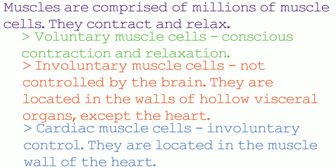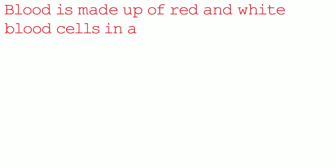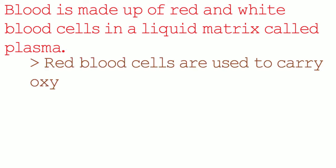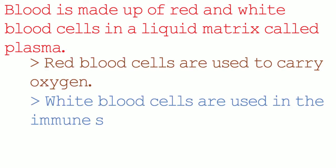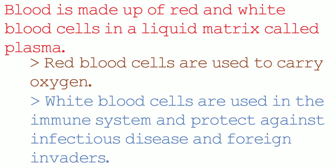Another type of tissue is blood. Blood is made up of red and white blood cells in a liquid matrix called plasma. Red blood cells are used to carry oxygen and white blood cells are used in the immune system. They protect against infectious diseases and foreign invaders.